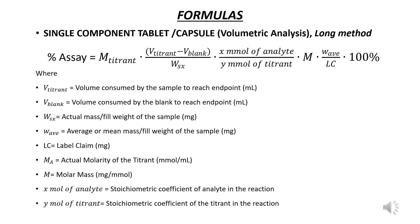For the long method assay using volumetric analysis of a tablet or capsule, the following formula is given. The assay is equal to the molarity of the titrant multiplied by the difference in the volume consumed for the titrant and the blank, multiplied by the stoichiometric coefficient for the analyte in the reaction, multiplied by the molar mass of the analyte, multiplied by the average weight per tablet or fill weight per capsule, multiplied by 100%. The product is divided by the weight of the sample times the stoichiometric coefficient of the titrant in the reaction, times the labeled amount.